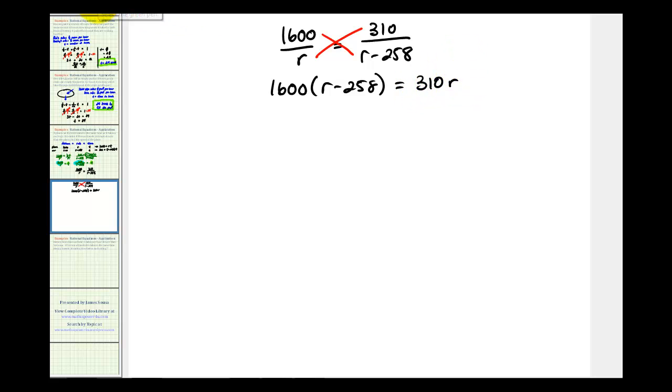Now we'll go ahead and clear the parentheses and solve for r. So we'll distribute here, we'll have 1,600r minus 1,600 times 258 is equal to 412,800 equals 310r.